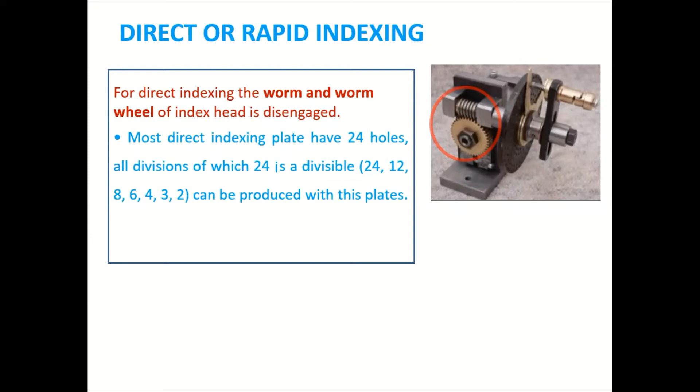It means that if you want to divide any periphery into the two parts, three parts, four parts, six parts, eight parts, 12 parts, then we can use the direct or rapid indexing method.